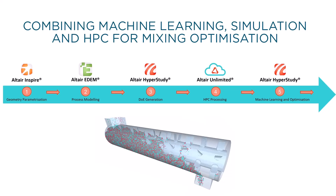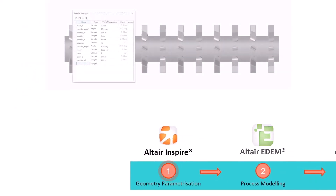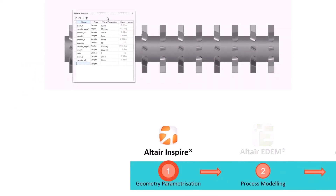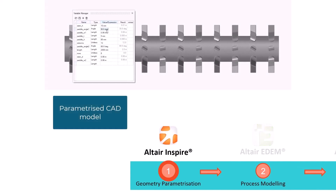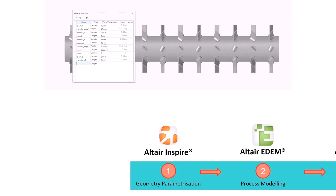For mixing optimization, the first step in this methodology is geometry parameterization. In this video series, we will be focusing on a continuous mixer as a case study. We will create and parameterize a CAD model of the mixer shaft using Altair Inspire, and we'll be using the variable manager for quick design exploration of our design parameter space.